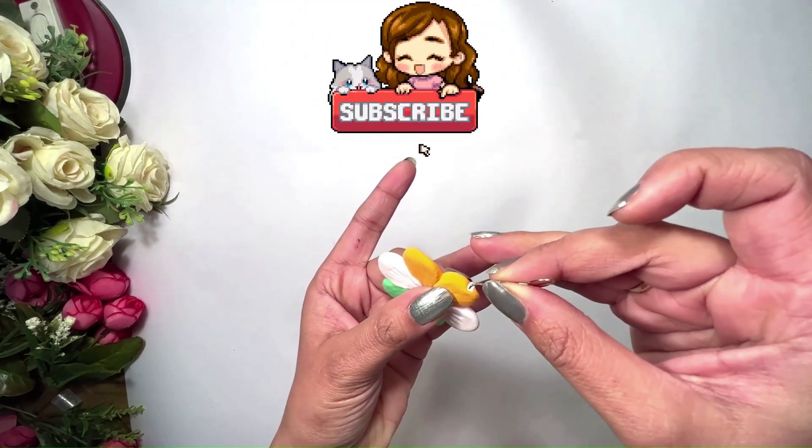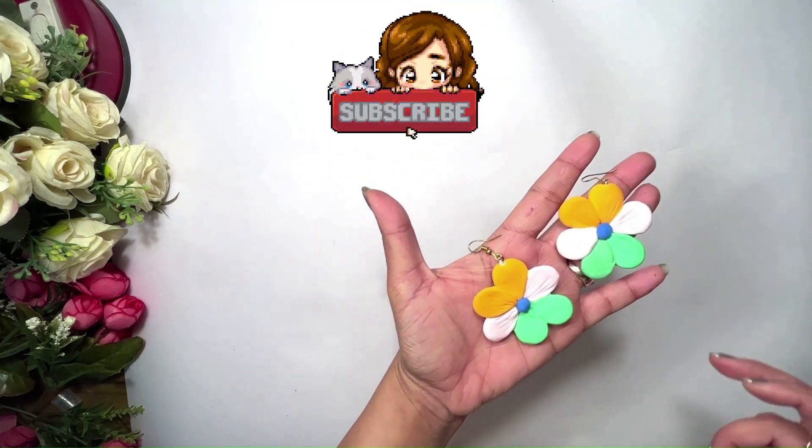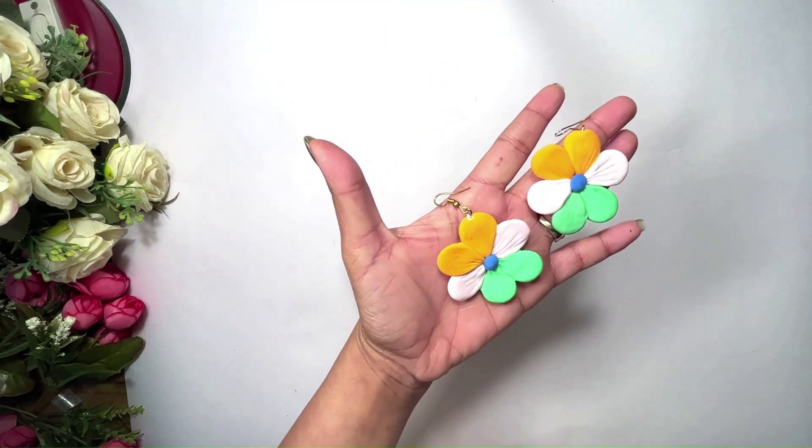Now, use this flower to make tricolor earrings. Take a pair of earring hoops and glue them to the flowers. Our tricolor earrings are ready.